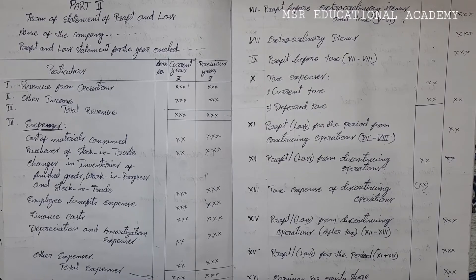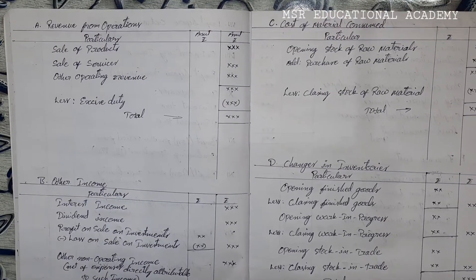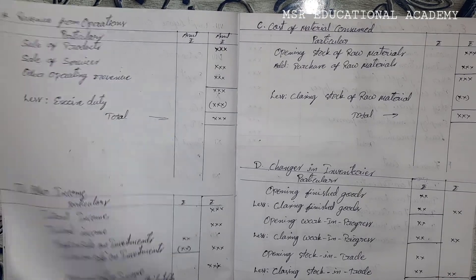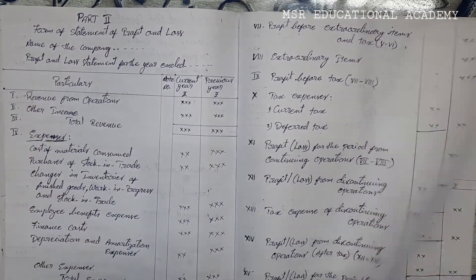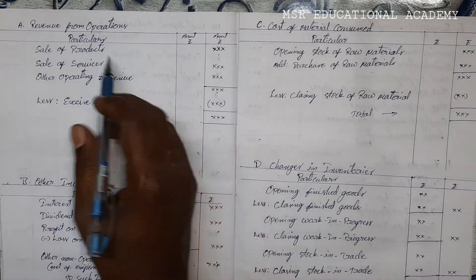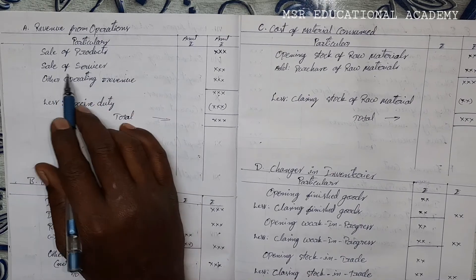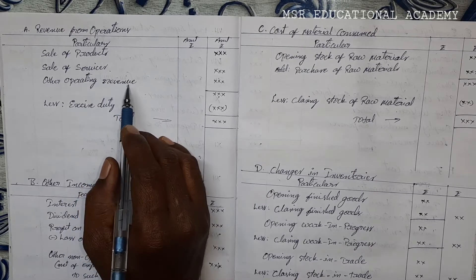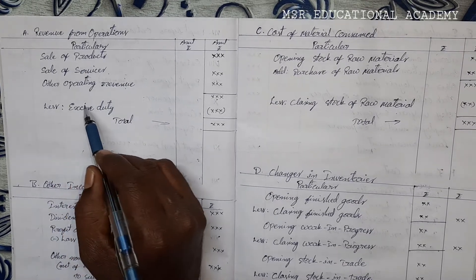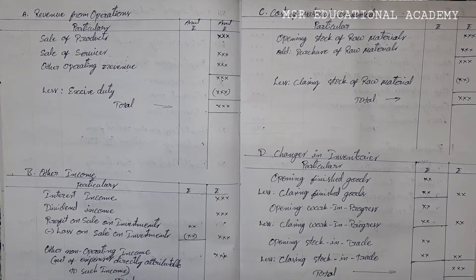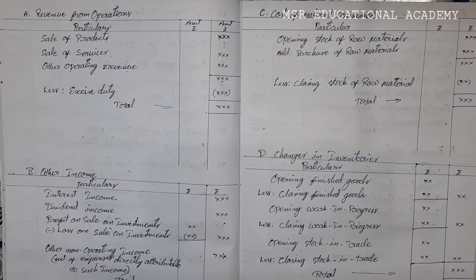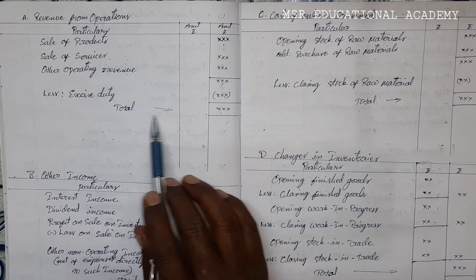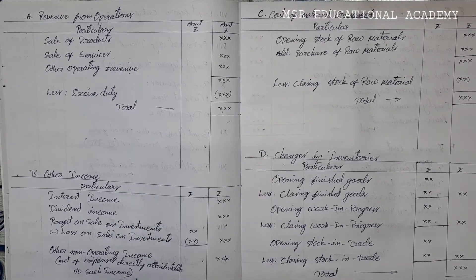Next, we are going to notes to accounts. Notes to accounts briefly discusses the profit and loss statement items. The first item is revenue from operations — revenue from operations is calculated as: sale of products, sale of services, other operating revenue. If it is an operating service business, then it is operating revenue. Then less excise duty — if any excise duty is given in the question, you should deduct it from sale of products or sale of services. Then you will get the total revenue from operations.